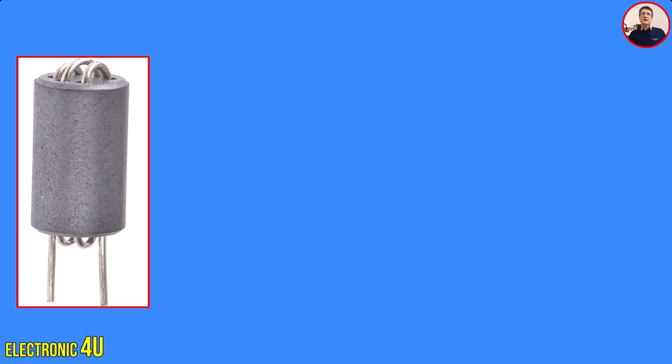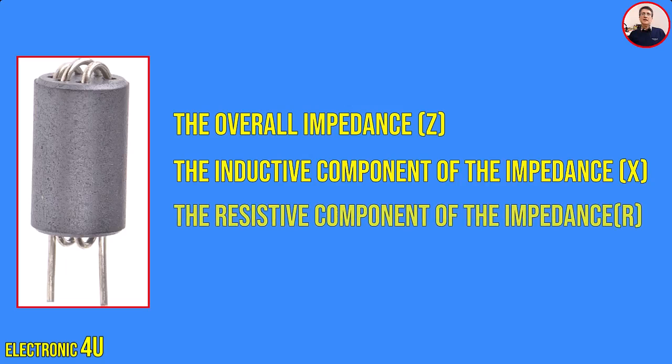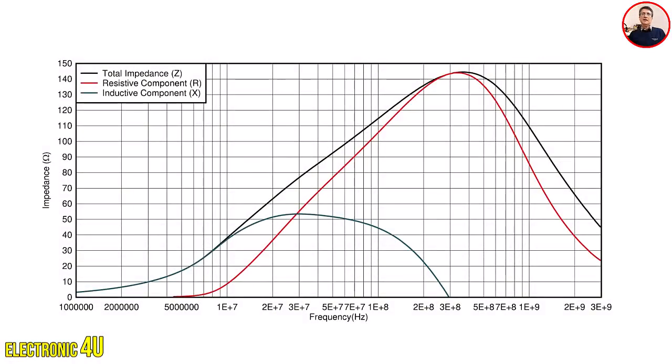This plot should include three lines: the overall impedance Z, the inductive component of the impedance X, and the resistive component of the impedance R. A ferrite bead should be chosen such that the resistive component is maximized at the noise frequency to dissipate as much energy as possible, while the overall impedance at the switching frequency is minimized to prevent unwanted losses.